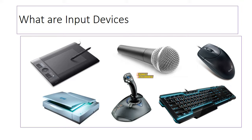The mouse can be used for moving the cursor around — left click, right click, scroll wheel. The keyboard lets you type and use different shortcuts. It's one of the primary ways of inputting data into a computer.